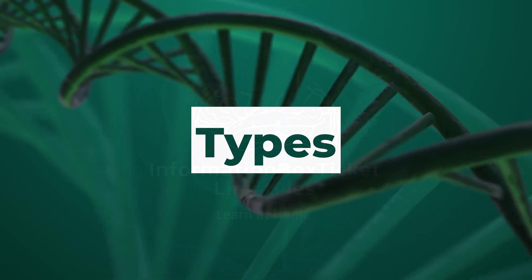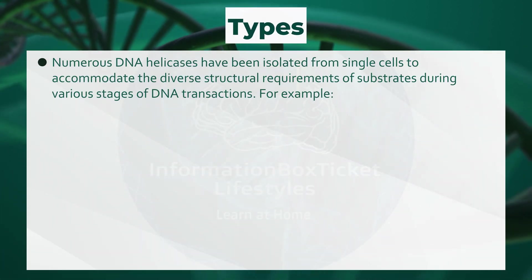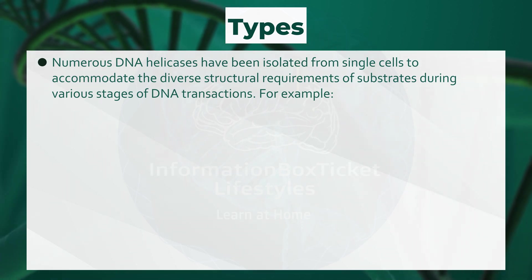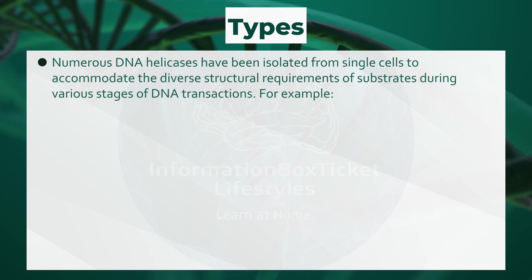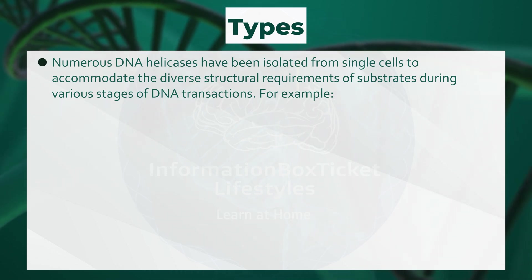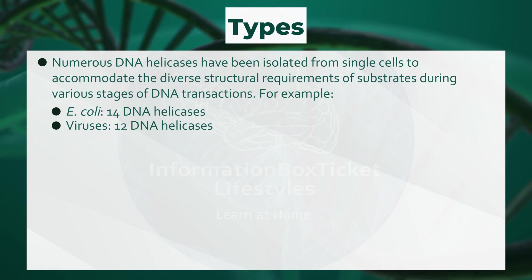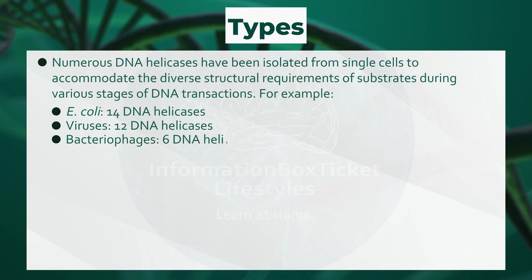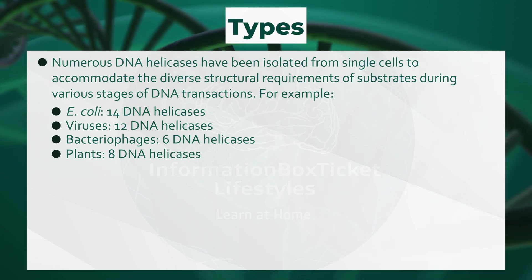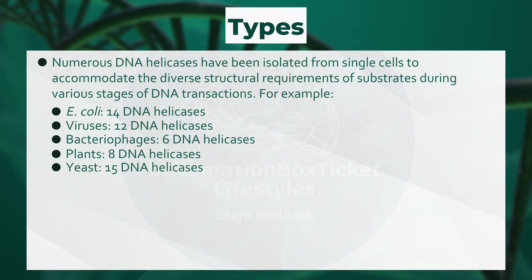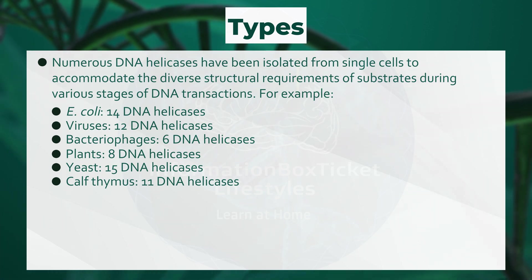Types of DNA Helicases: Numerous DNA helicases have been isolated from single cells to accommodate the diverse structural requirements of substrates during various stages of DNA transactions. For example: E. coli has 14 DNA helicases, viruses have 12, bacteriophages have 6, plants have 8, yeast has 15, calf thymus has 11, and human cells have approximately 24 DNA helicases.